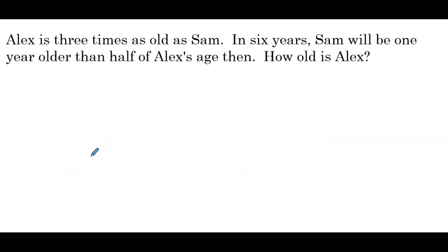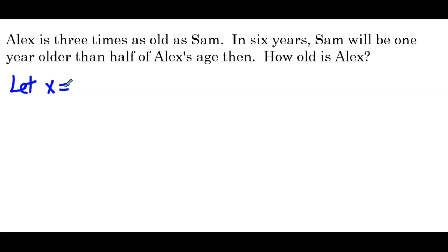Our next example: Alex is three times as old as Sam. In six years, Sam will be one year older than half of Alex's age then. How old is Alex? Alex's age is defined in terms of Sam's age, so x is Sam's age, and 3x equals Alex's age.